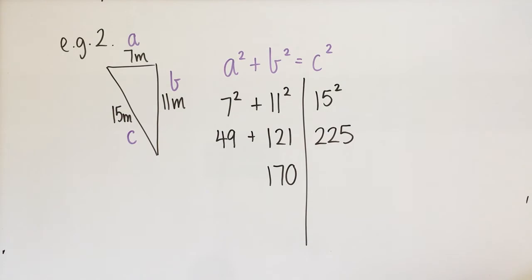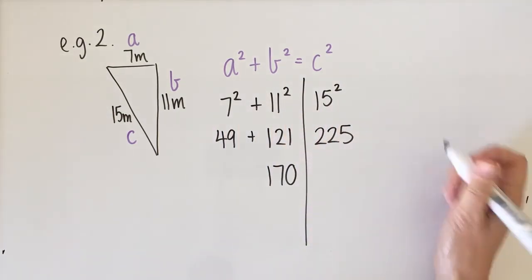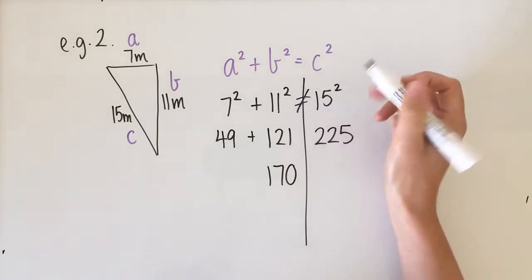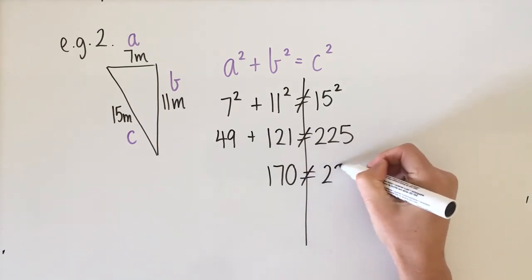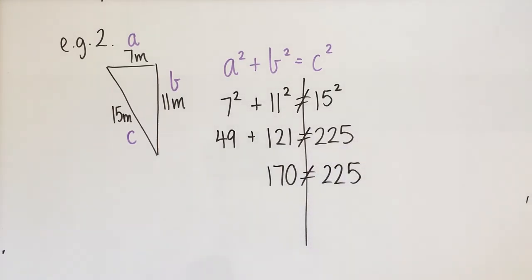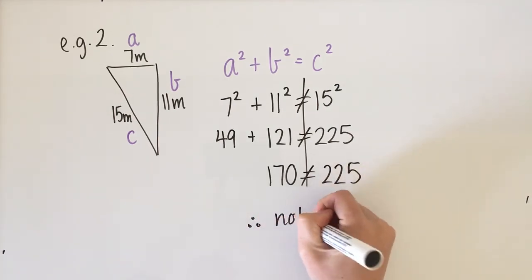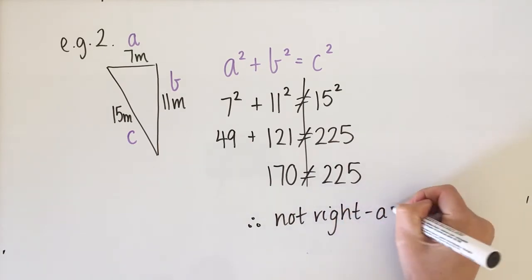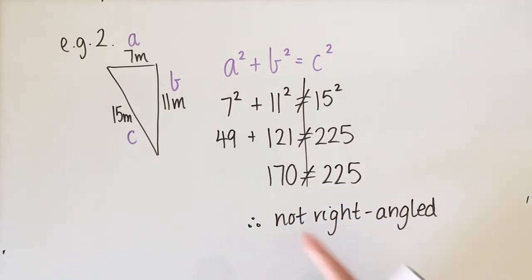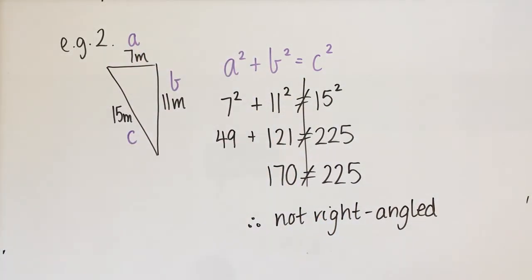In this scenario, 7 squared plus 11 squared does not equal 15 squared — 170 does not equal 225. So we say they do not equal the same thing. Therefore, this triangle is not right-angled. Because the two sides don't equal the same, this cannot possibly be a right-angled triangle, even though it might look like one from the way it's drawn.